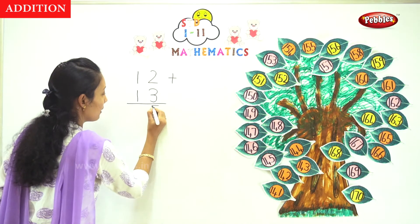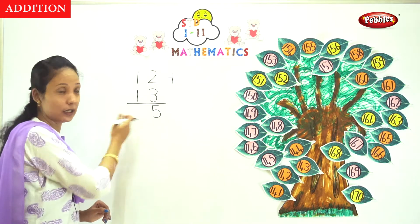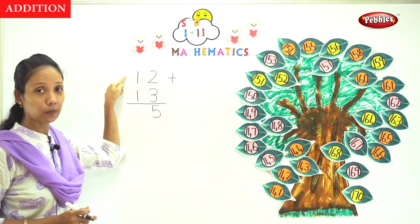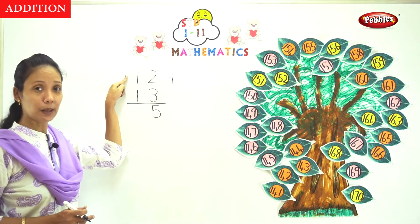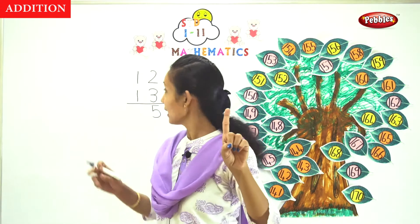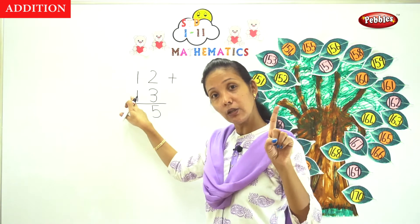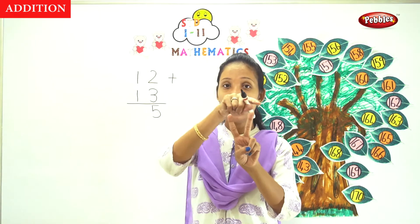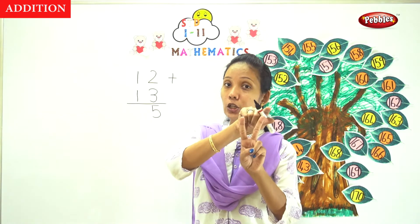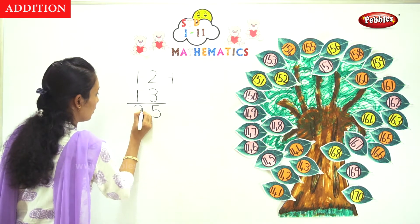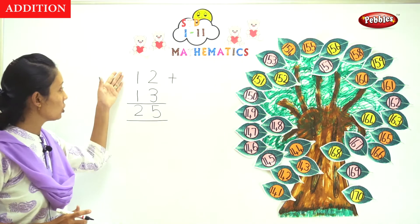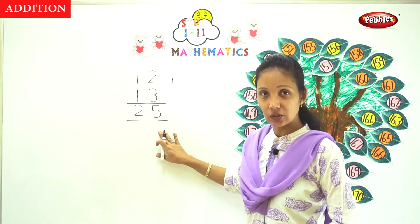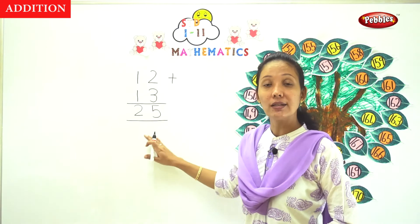Where is the next number? The number is 5. Now here is the number 1 on the left side of 12. Take 1 finger. Then the left-side digit of 13 is also 1. So 1 and 1 — how many fingers? 1 and 2. So the tens digit answer is 2. Therefore, 12 plus 13 equals 25. Your answer is 25.